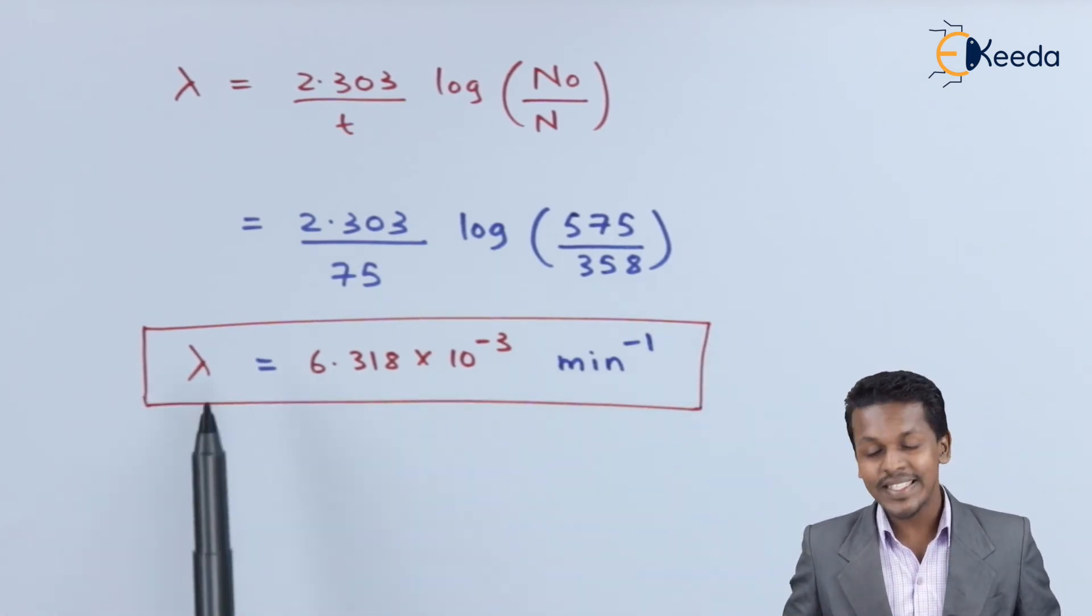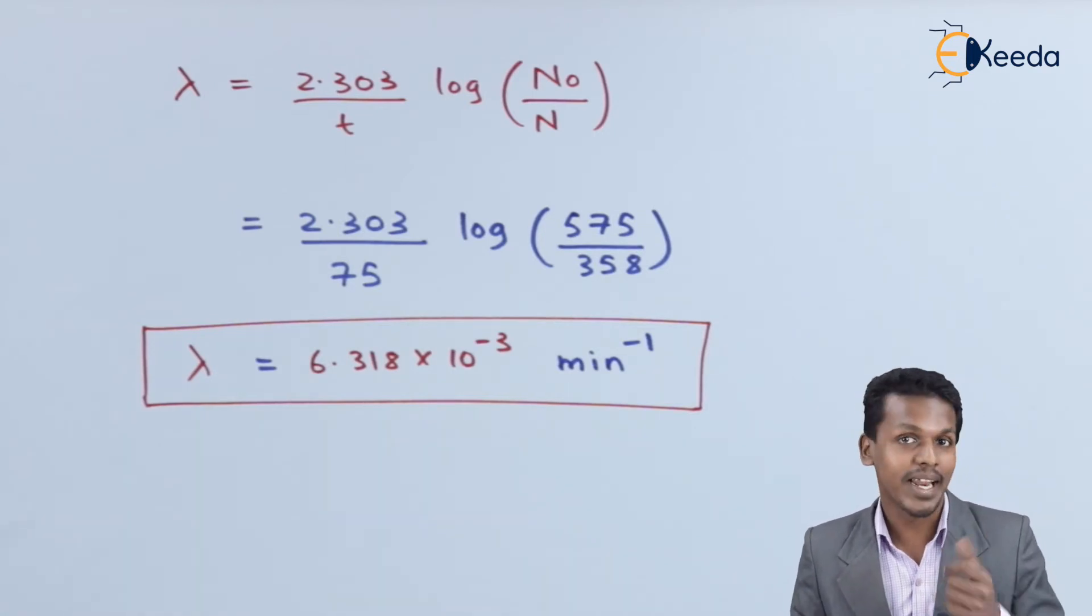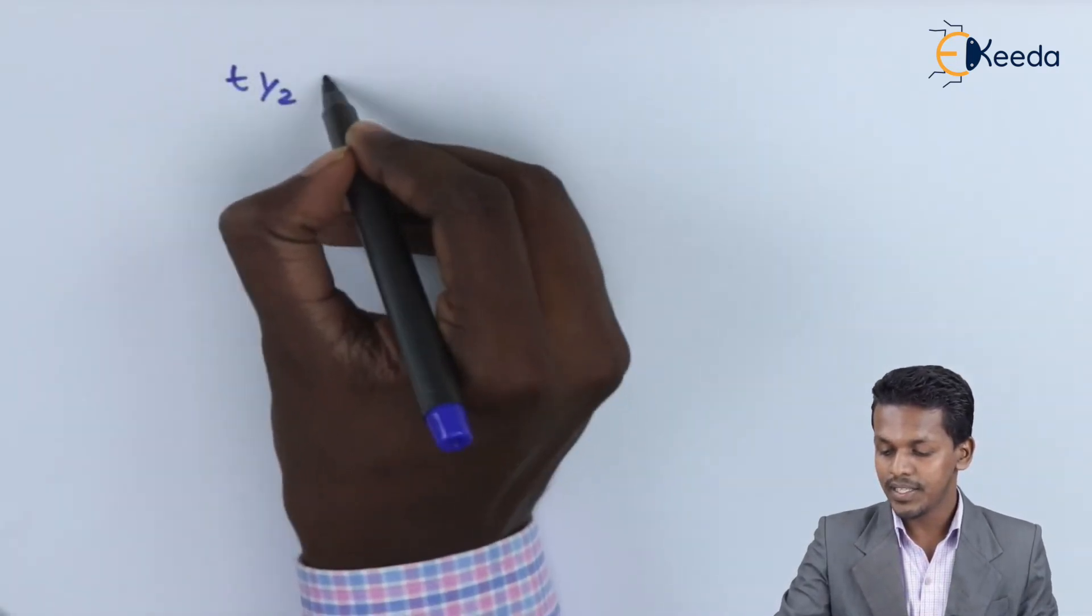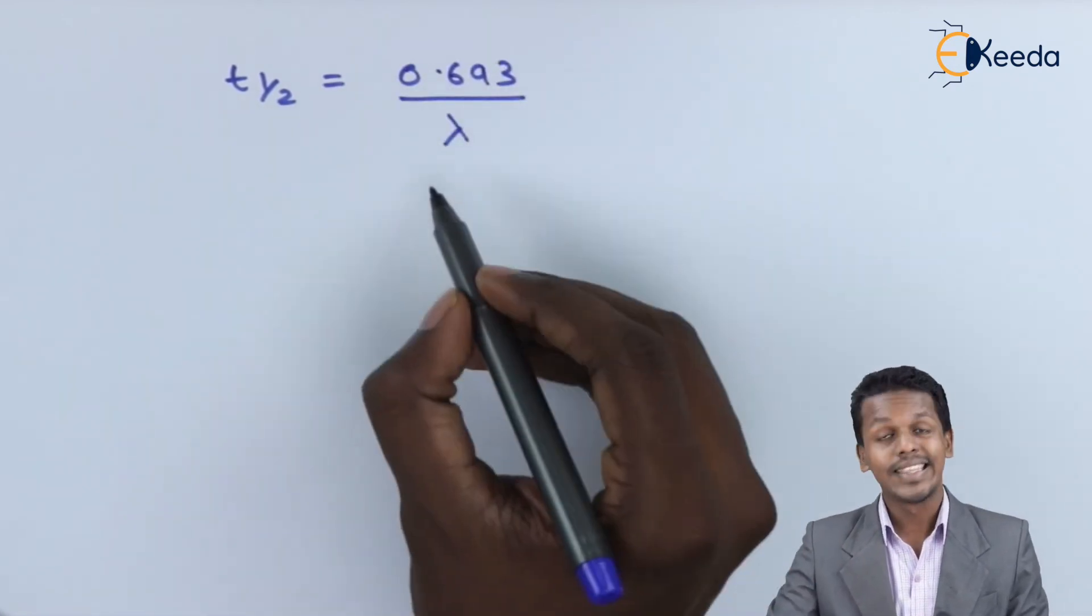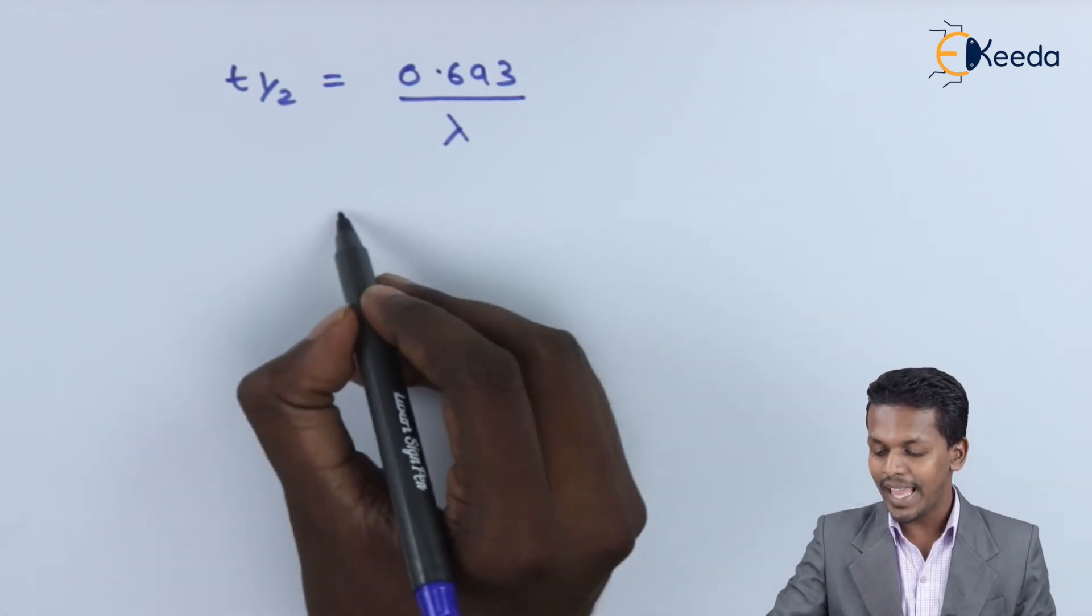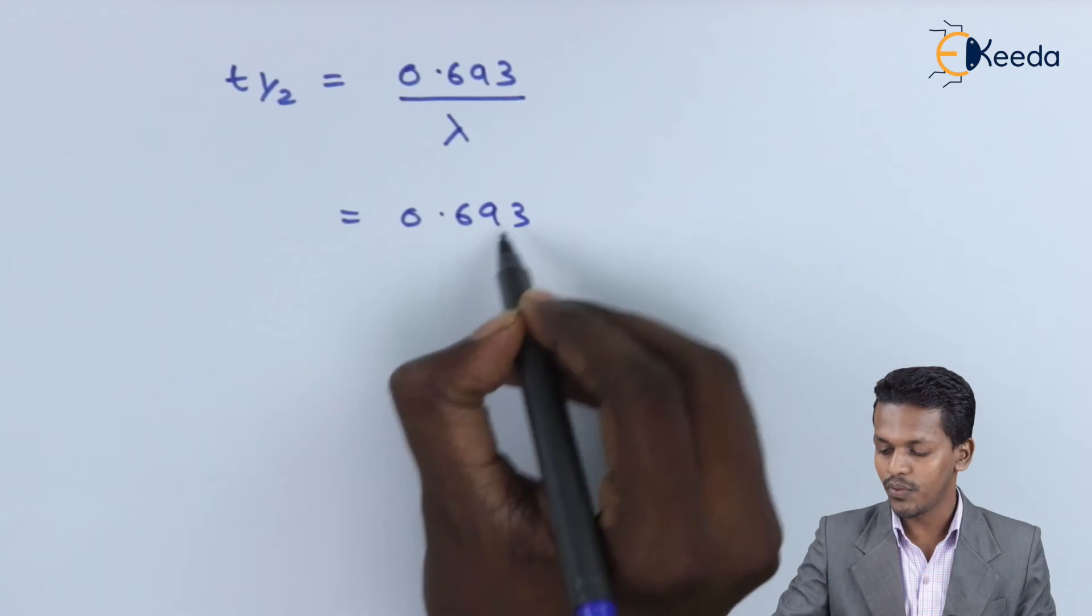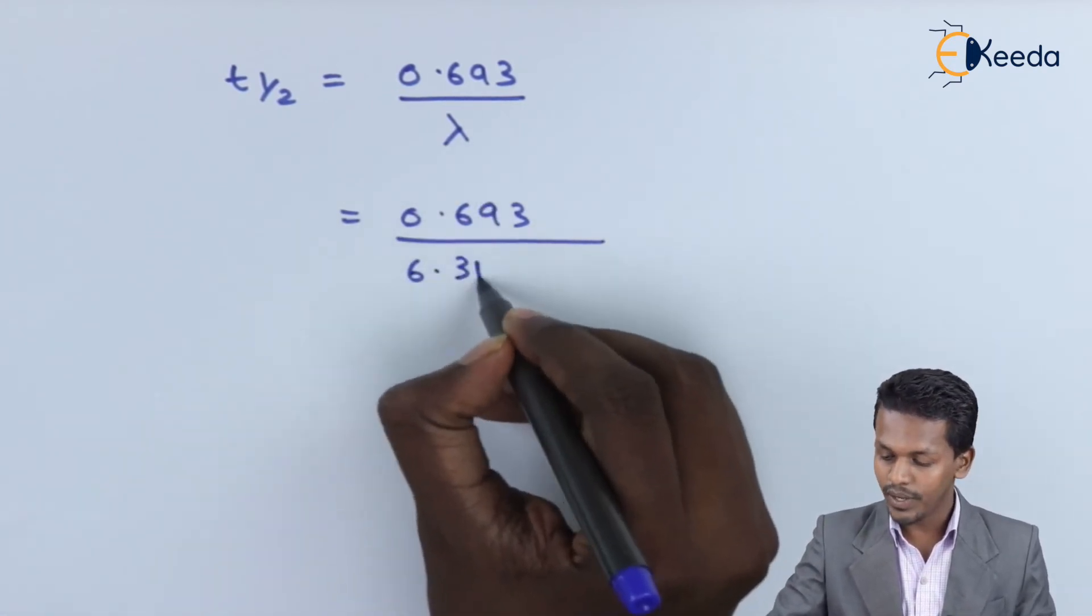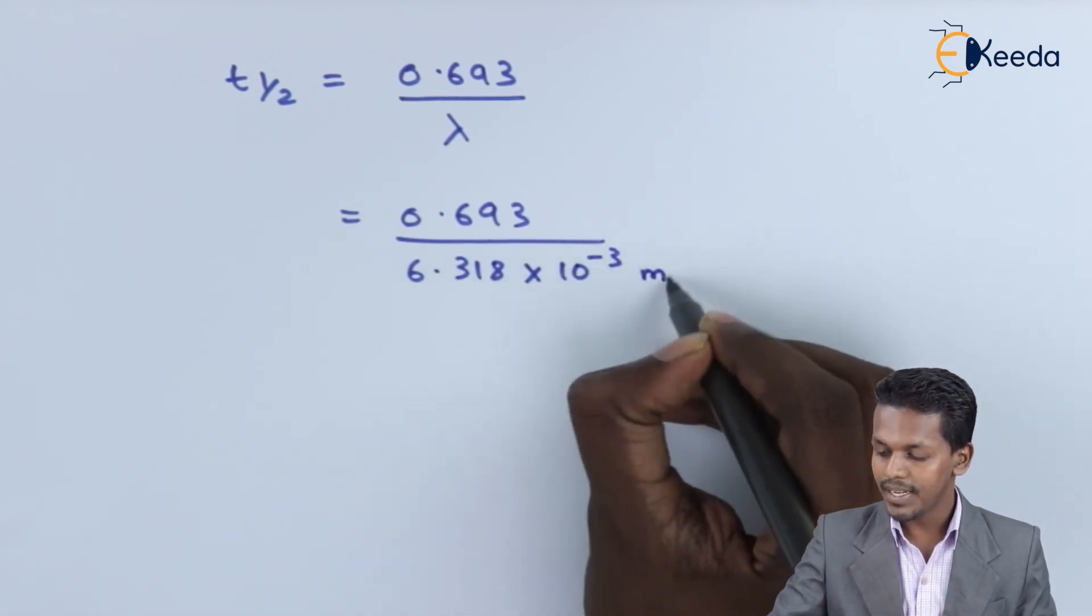Here we have the value of decay constant, and we're going to substitute the value: t½ = 0.693/(6.318 × 10⁻³ min⁻¹). We can simplify this - we can make the denominator 10⁻³ go up to the numerator, and we get 693/6.318.